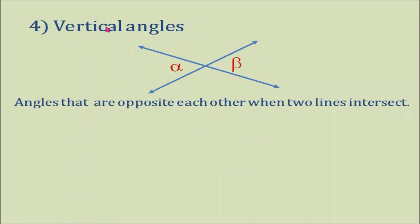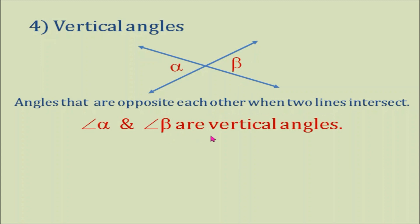Number 4: Vertical angles — angles that are opposite each other when two lines intersect. So we have here angle A and angle B, and they are vertical angles. Vertical angles are congruent, so angle A is congruent to angle B.